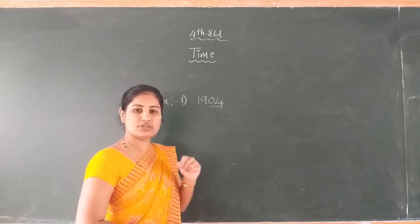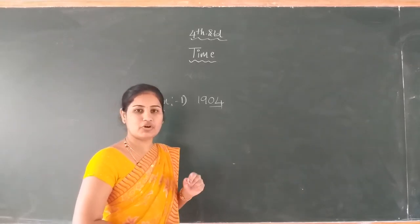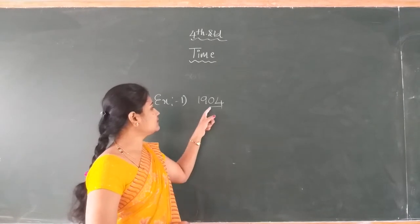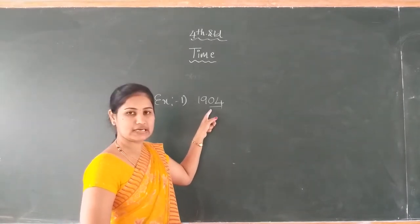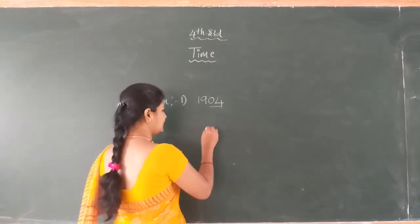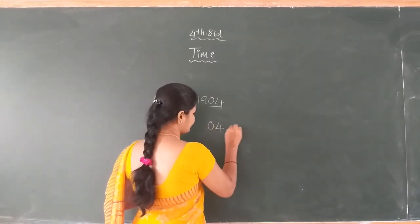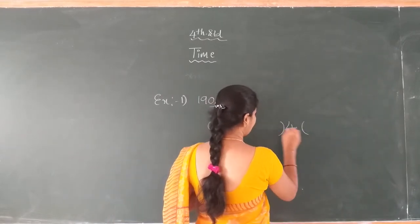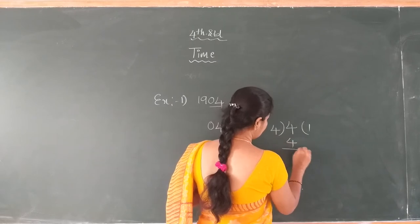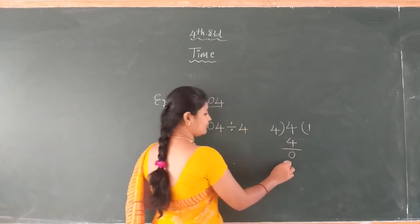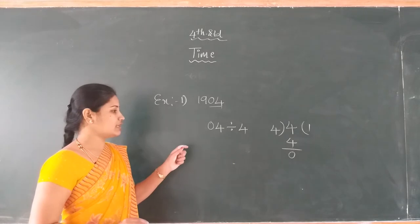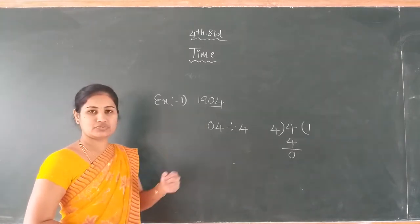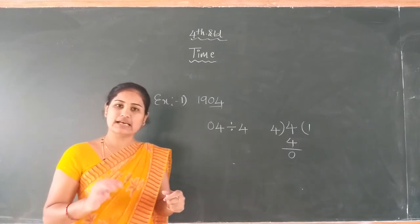Dear student, the given year 1904 — the last two digits are 04. The 04 is completely divided by 4. Yes, dear student, 4 divided by 4 is 1 with remainder 0. It is completely divided. Therefore, the 1904 year is a leap year.